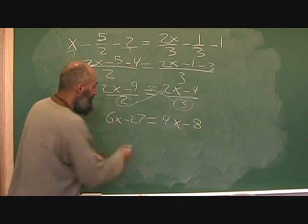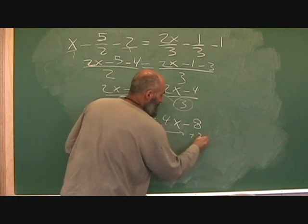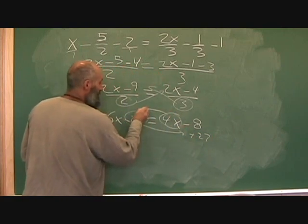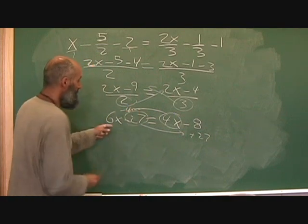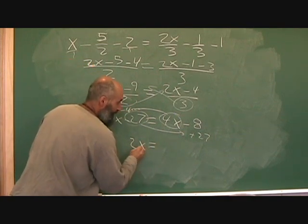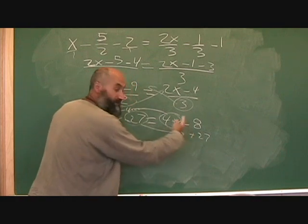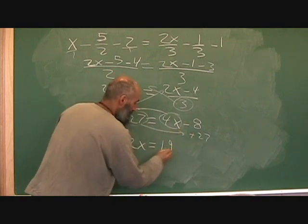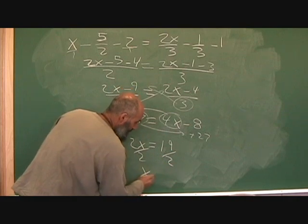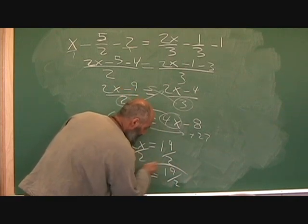To solve: grab this term, bring it over - plus twenty-seven. Grab that term, bring it over - minus four x. Six x minus four x is going to be two x. And twenty-seven minus eight is going to be nineteen. Divide by two, divide by two. So x is equal to nineteen over two.